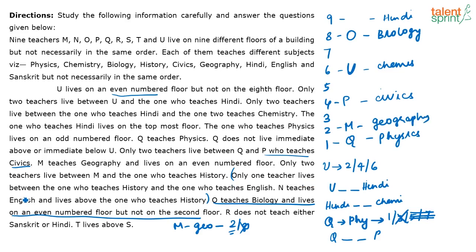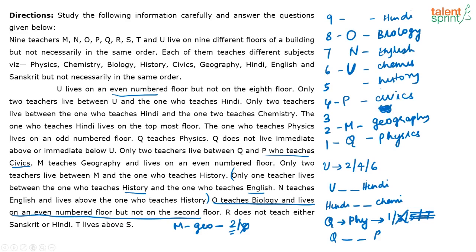Only two teachers live between M and the one who teaches history. Since M is on floor 2, history must be on floor 5. Next, only one teacher lives between the history teacher and the English teacher, and N teaches English and lives above the history teacher. So N must be on floor 7 teaching English. The remaining subject for the floor below history is Sanskrit, so floor 3 has Sanskrit.